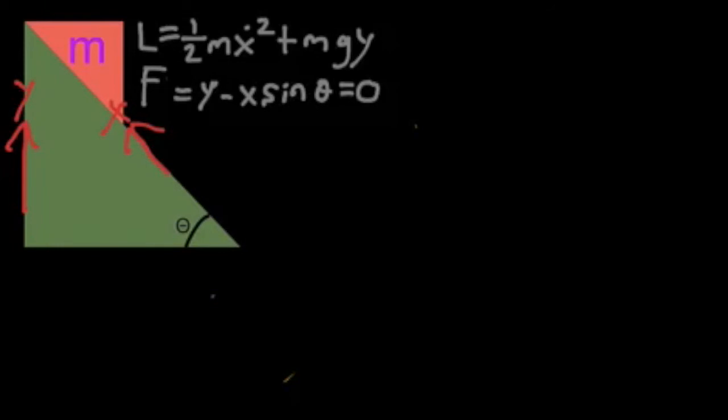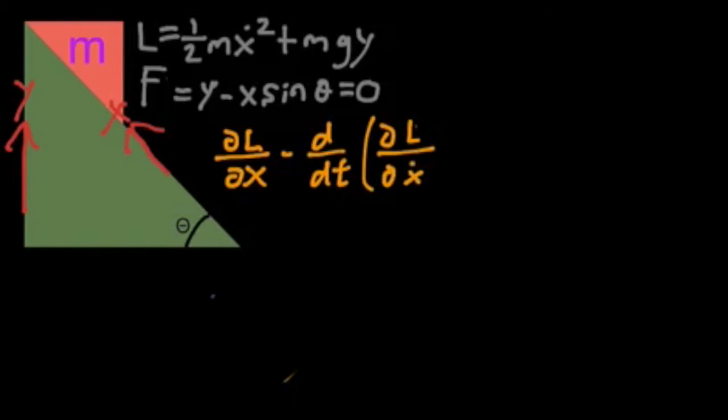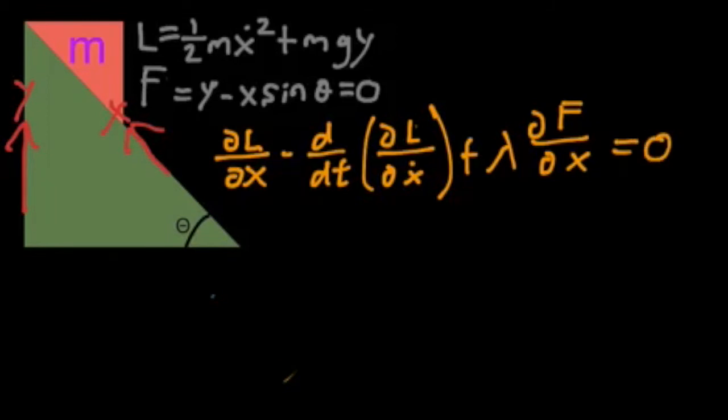And that looks a little something like this. The partial derivative of L with respect to x, which means we just treat all other variables as constants, minus the full time derivative of the partial derivative of L with respect to x dot, plus lambda times the partial derivative of f with respect to x, is all equal to zero. And lambda is just an unknown constant that's going to end up representing the forces involved in this system.